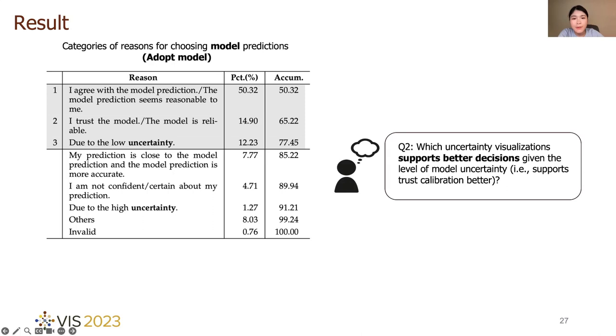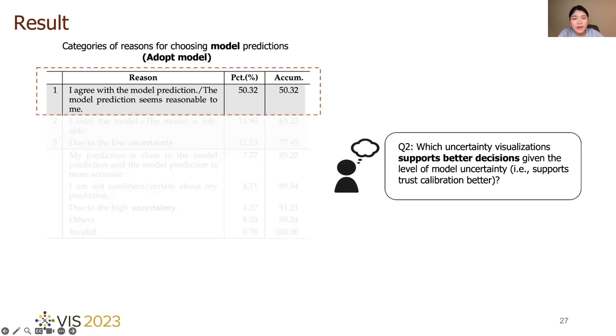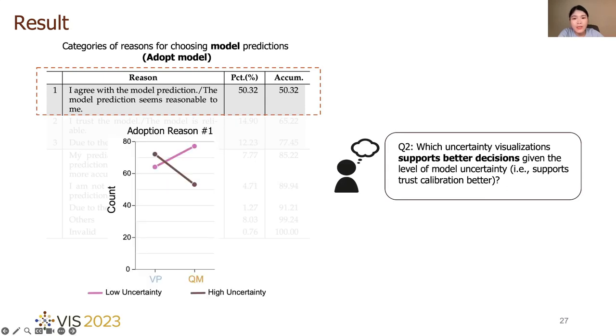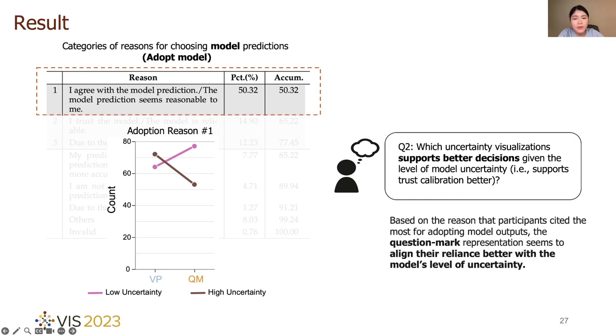Also, from participants' self-reported reasons for adopting model, the most cited reason reflected the human trust in AI model through the agreement. Our study observed that, under question mark condition, this reason was more cited by human in low uncertainty tasks but less cited in high uncertainty tasks, while the citation of the reason shows converse trend when people saw a violin plot. This also verified that question mark align human reliance better with the model's level of uncertainty compared to the violin plot.